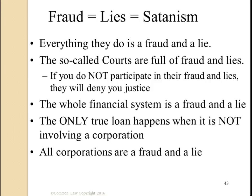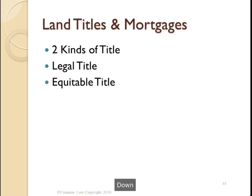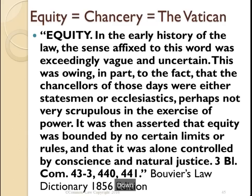Everything they do is a fraud and a lie. The so-called courts are full of fraud and lies. If you do not participate in their fraud and lies, they will deny you justice. The whole financial system is a fraud and a lie. The only true loans happen when a corporation is not involved. There are two kinds of title: legal title and equitable title. When you own a house with a mortgage on it, you have legal title but there's an equitable interest in that property as well. This is Bouvier's Law Dictionary, 1856 edition, on equity.